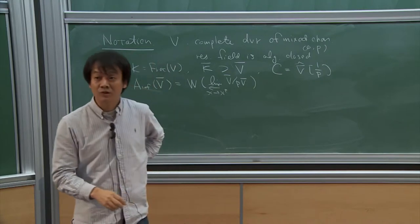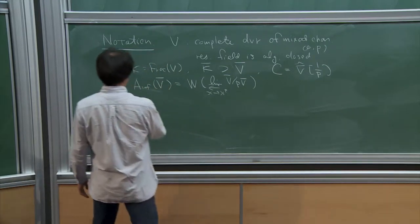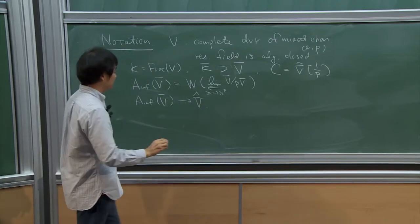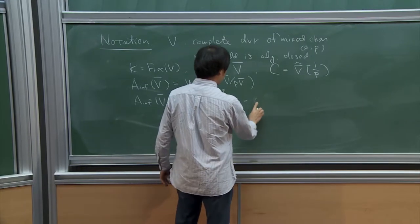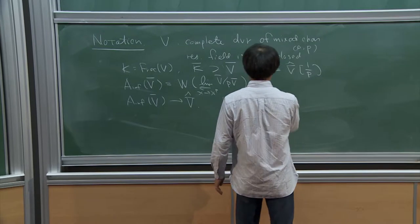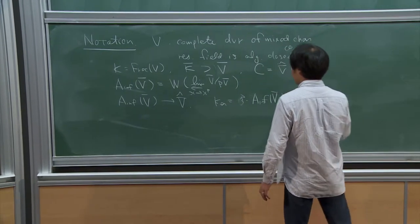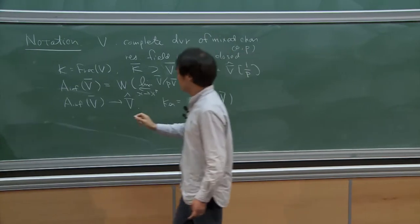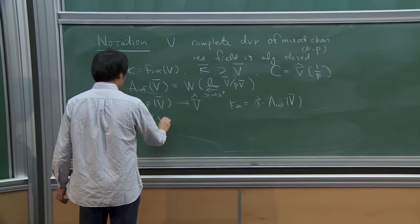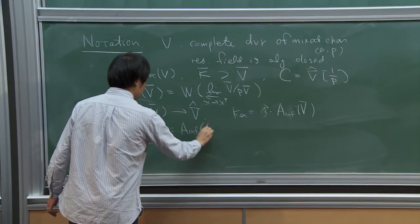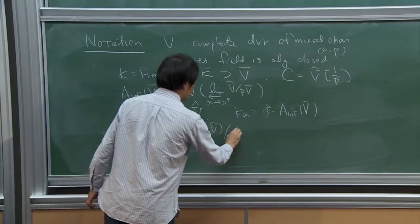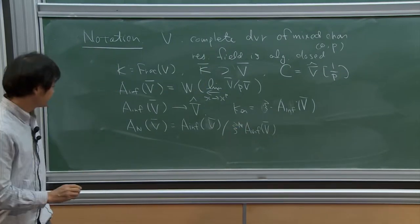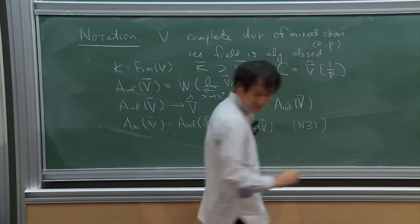A_inf(V) is the ring used to construct the period rings. As is well known, we have a natural surjective ring homomorphism whose kernel is generated by one element usually denoted ξ. And ξ is, in fact, a nonzero divisor in this ring. Finally, I define A_n(V-bar) to be the reduction of this modulo the n-th power of ξ, where n is a positive integer.